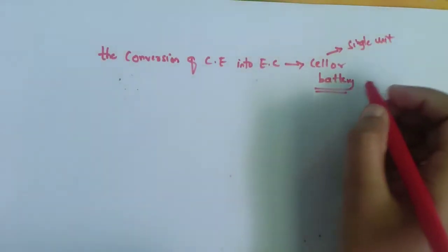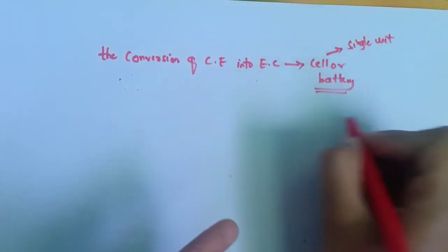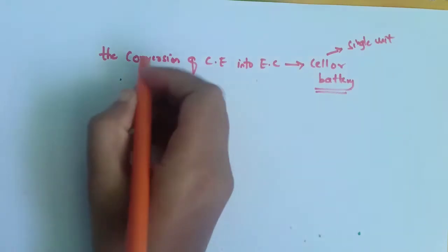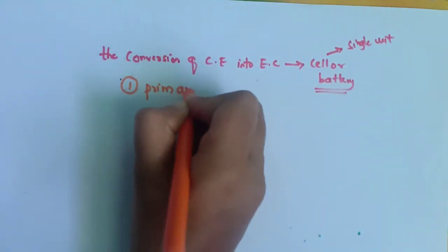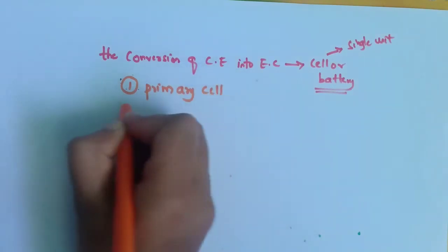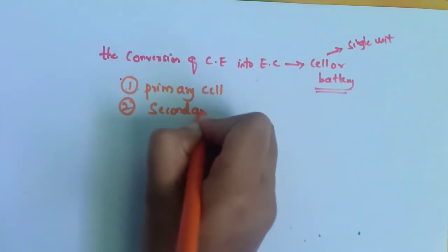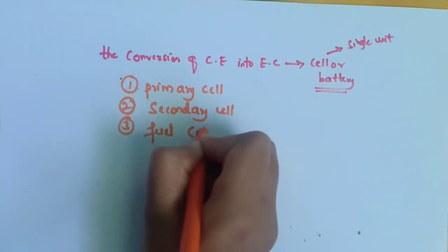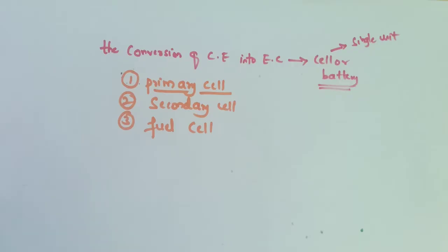These cells are classified into three types: the first one is primary cell, the second one is secondary cell, and the third one is fuel cell. In this video we are going to learn about the primary cell.